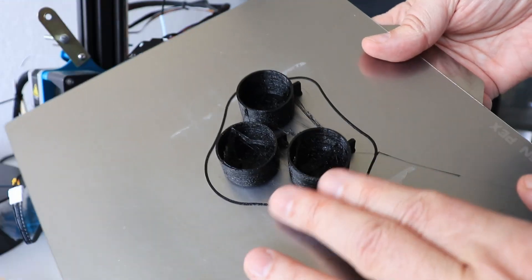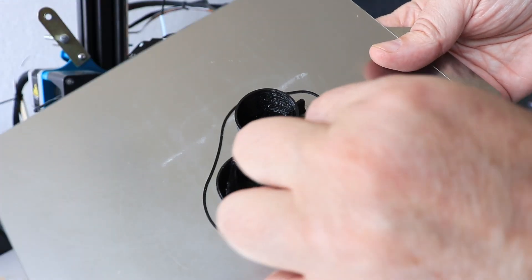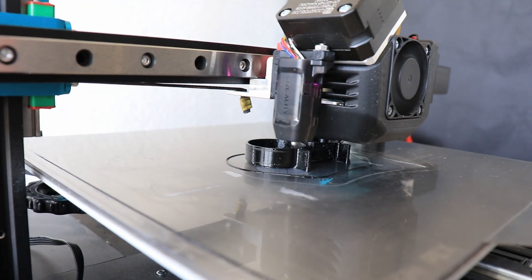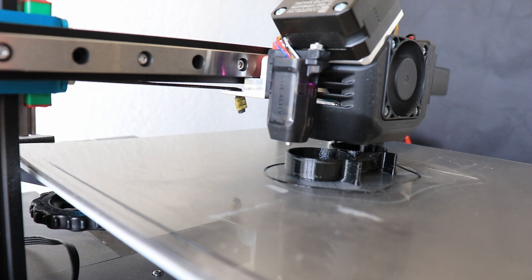These are test cups for the bacterial testing and they don't look too nice. I had to do some corrections in E-steps and disable the retraction and you will see in a few seconds it was much nicer printing.